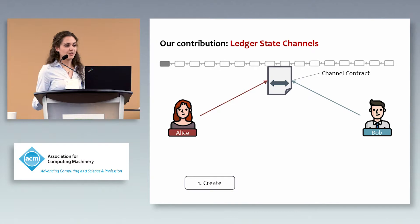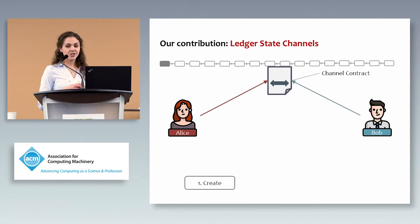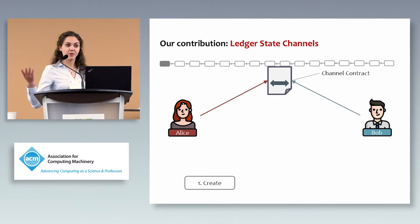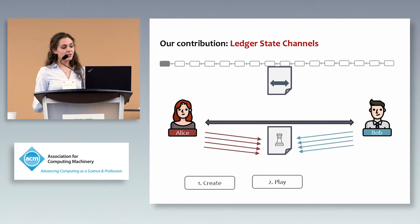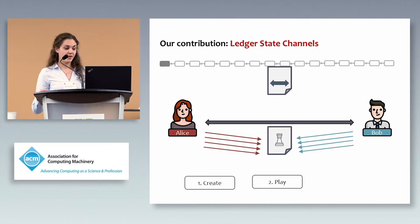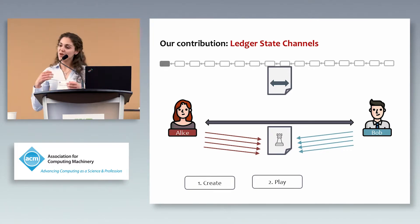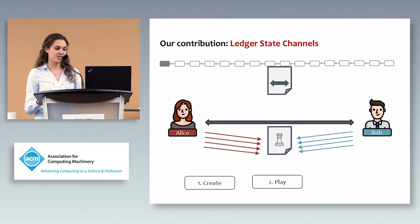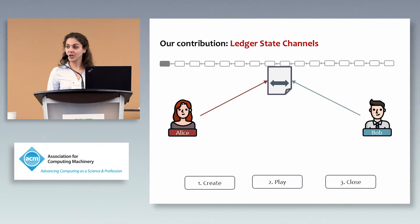Our first contribution is so-called ledger state channels. Alice and Bob first agree on a special contract — a channel contract — where they say they want to run some applications or games off-chain. By deploying this smart contract on a blockchain, they create a ledger state channel. They can then start playing their game off-chain, even multiple games in a row — chess, lottery, etc. Once done, they close their channel on the blockchain.